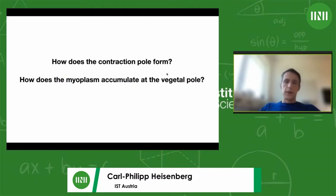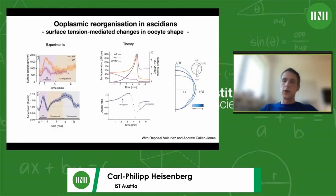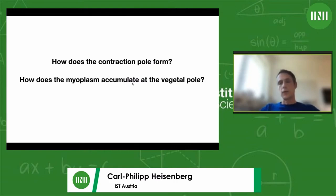The question left from this interplay between theory and experiments is how the contraction pole is actually formed, because the shape changes due to actomyosin flows and accumulation do not explain the expansion phase. And of course we would like to understand how the myoplasm accumulates associated with these actomyosin-driven shape changes.